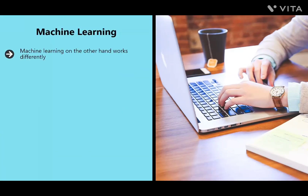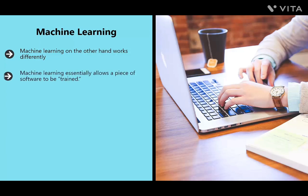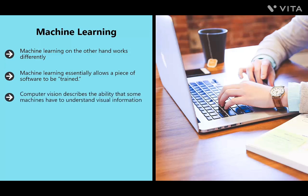Machine learning works differently. It utilizes huge data sets to gain surprising and almost frightening capabilities, essentially allowing software to be trained. An obvious example is computer vision — the ability for machines to understand visual information. Google Lens can tell you what you're pointing your phone's camera at, whether that's a type of flower or a product you can buy in stores. Computer vision is also necessary for self-driving cars.